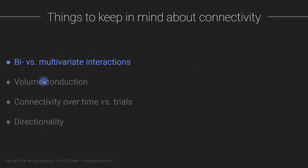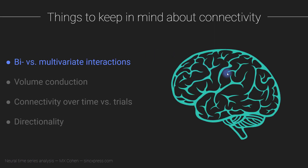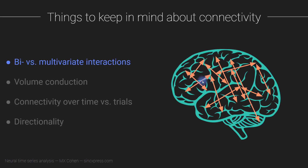The first of four points is bivariate versus multivariate interactions. Bivariate refers to connectivity measures between two electrodes — you're considering a pair of electrodes at a time — whereas multivariate refers to a multitude of electrodes at the same time. In an actual brain there are tons of interactions: causal interactions, univariate, bivariate, and multivariate — a really rich network of interactions. However, when we do data analyses to look at connectivity, we generally ignore this rich multivariate structure.